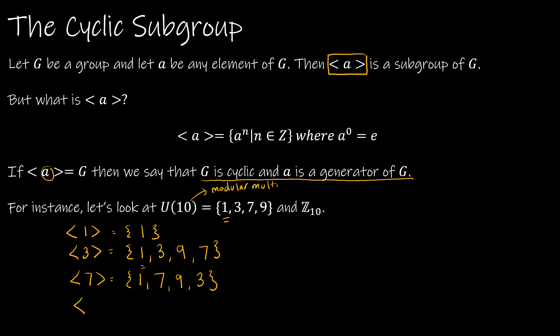If I look at 9, 9 to the zero is 1, 9 to the first is 9, 9 squared is 81 which is 1. So 1 generates only 1, 9 generates 1 and 9. Those are both subgroups.